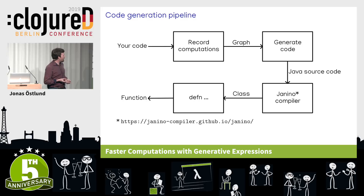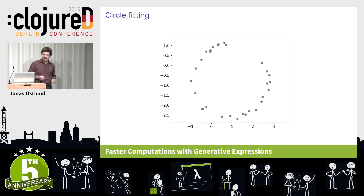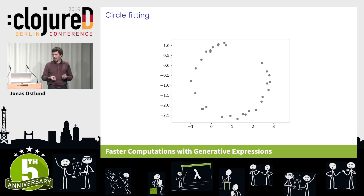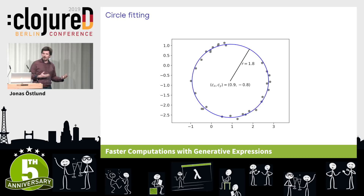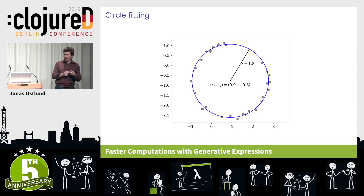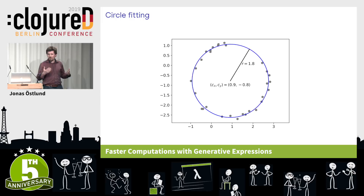Now we can move on to a more interesting example. We have a set of two-dimensional points forming a circle, and we would like to know the parameters of this circle — that is, the center and the radius. If we know the parameters, we can draw a circle that aligns perfectly with the points. In total we have three parameters: the x-coordinate of the center, the y-coordinate of the center, and the radius. We want to compute them from the points.